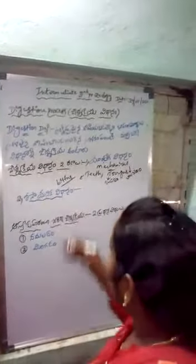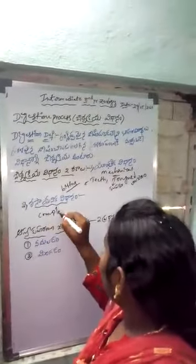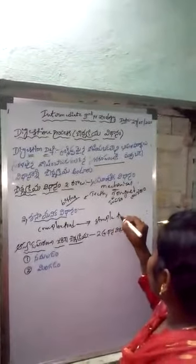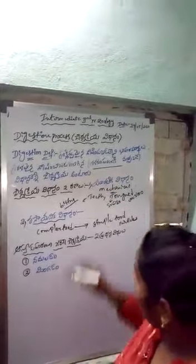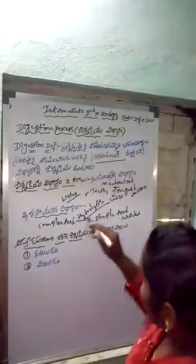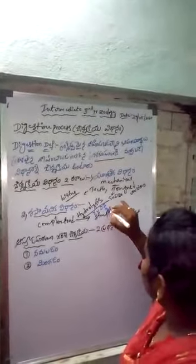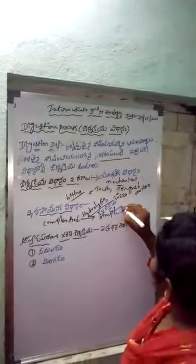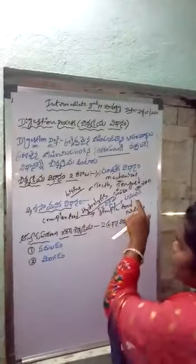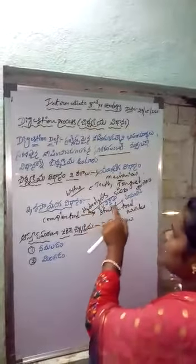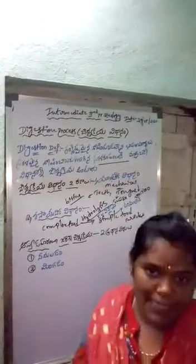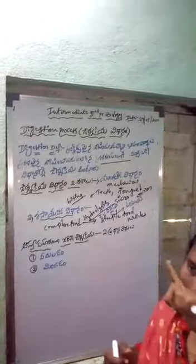The chemical process involves breaking down complex food material into simple food particles. Through the hydrolysis process, chemical action takes place. Enzymes participate in the hydrolysis process, converting complex food material into simple food particles. So the dilation process converts complex food material into simple food, using both mechanical and chemical processes.